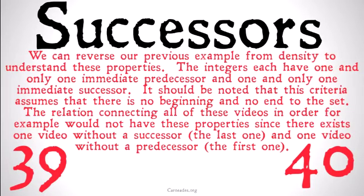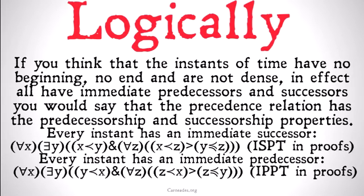Hopefully we'll look at a couple more properties that could apply to our set of videos afterward. But predecessorship and successorship don't, because they assume that our set is kind of infinite — it doesn't have an end, it doesn't have a beginning. If you think that the instants of time have no beginning, no end, and are not dense — in effect, all have immediate predecessors and successors — you would say that the precedence relation has the predecessorship and the successorship properties.